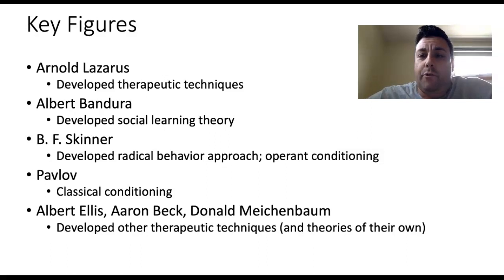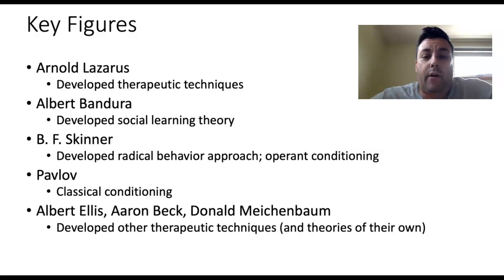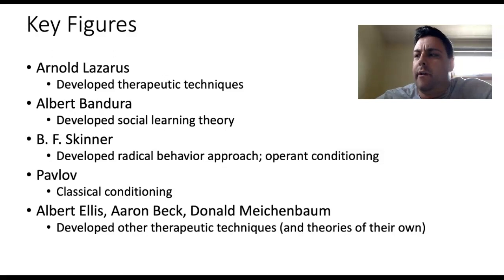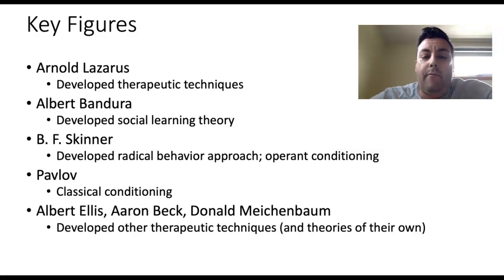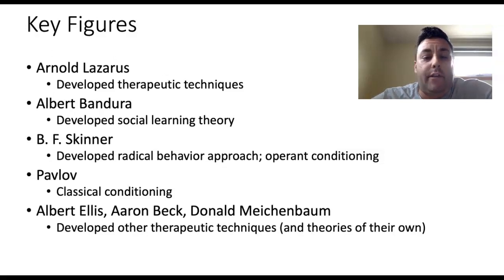Albert Bandura developed the idea of social learning theory, which we'll mention today, but that's a topic available for a paper or presentation. Skinner did a lot of the work on operant conditioning, influenced by Pavlov, who found evidence for classical conditioning as the way that organisms learn. Other names to know: Albert Ellis, Aaron Beck, and Donald Meichenbaum — they developed therapeutic techniques rooted in behavioral therapy but started to incorporate other variables, and we'll encounter them in other weeks.